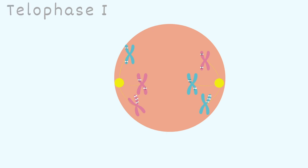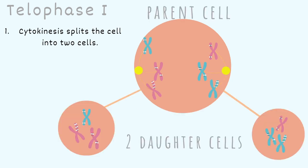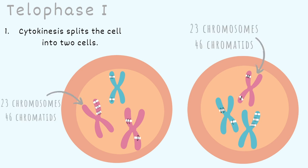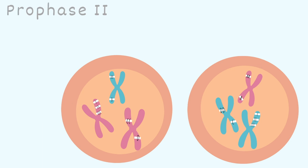After anaphase 1, the cell moves on to telophase 1. Here, cytokinesis splits the cell into two cells. We started with one parent cell and ended with two genetically different haploid daughter cells. Haploid means the cell contains half of the complete set of chromosomes. Each of these haploid cells contains only one set of chromosomes, each set consisting of paired sister chromatids. At the end of telophase 1, we have 23 chromosomes and 46 chromatids in each cell.